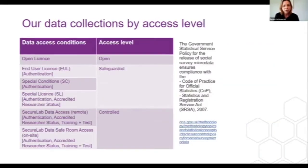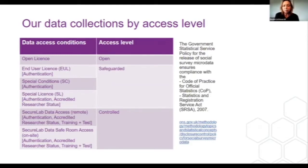We have three access levels: open, safeguarded, and controlled. Open is quite clear — it's open license. Safeguarded covers end user license, special conditions, and special license data sets, requiring registration and a small application process, but these you can download to your desktop. This is very different to controlled or secure lab data, which you cannot download — you can only access remotely, either from your institution or via safe room-only access. In any case, you need to be authenticated, accredited, be an approved researcher, undergo safe researcher training, and pass a test before you are given your login and can start working on the data.